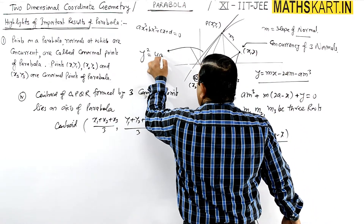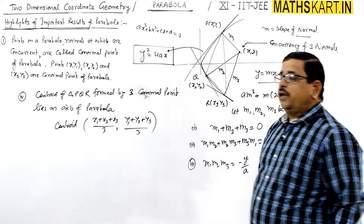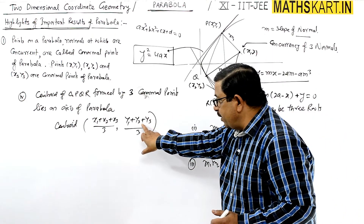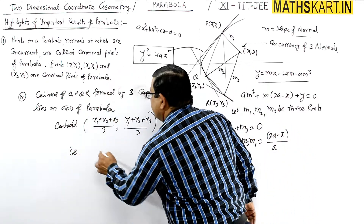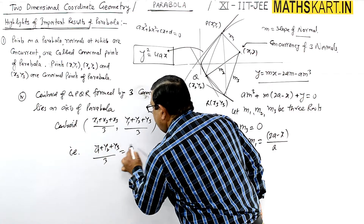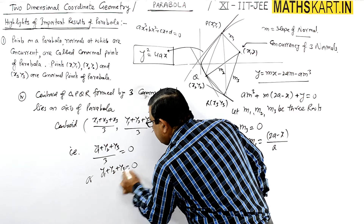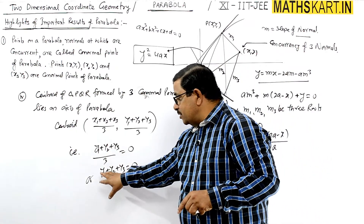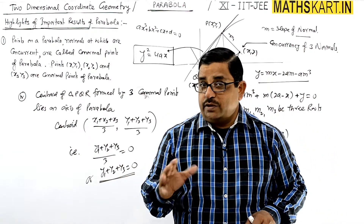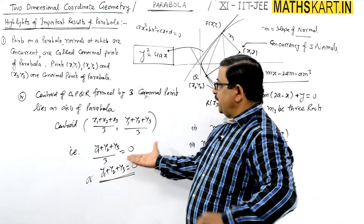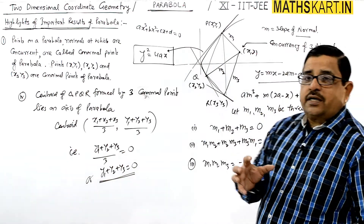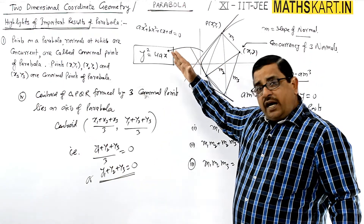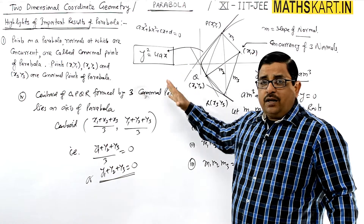For the standard parabola y²=4ax, the x-axis is the main axis where y=0. Therefore y1+y2+y3 divided by 3 equals 0, which means y1+y2+y3=0. This is an important result: the sum of the y-coordinates of the co-normal points equals zero. Remember all these results as questions can be created from each of them.